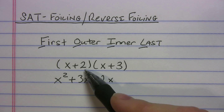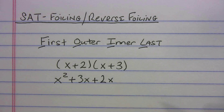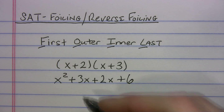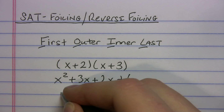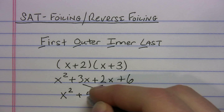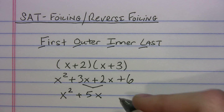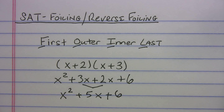Now let's do the last terms — the terms on the ends: positive 2 times positive 3 gives us 6. At this point all you do is combine like terms: bring down x squared, 3x plus 2x gives 5x, and bring down the 6. You're done! Let's do another example to get a lot of practice in.